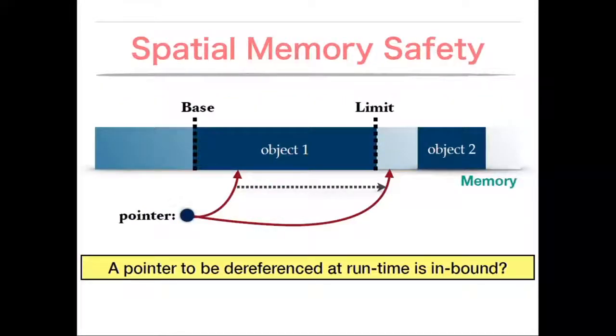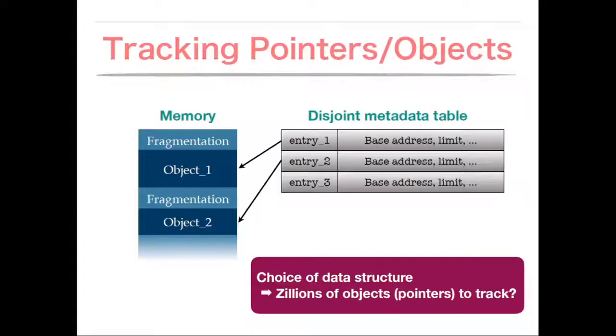Today I am going to focus on spatial memory safety. Spatial memory safety is to find the memory error if the pointer is between the base address and its limit. This is very simple, but to detect the memory error, we have to store metadata for each object.